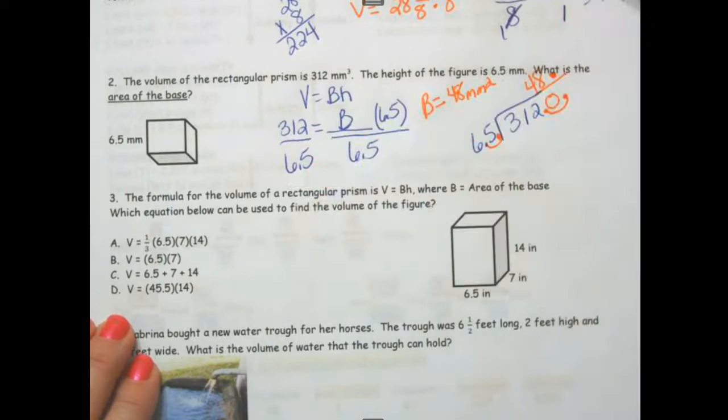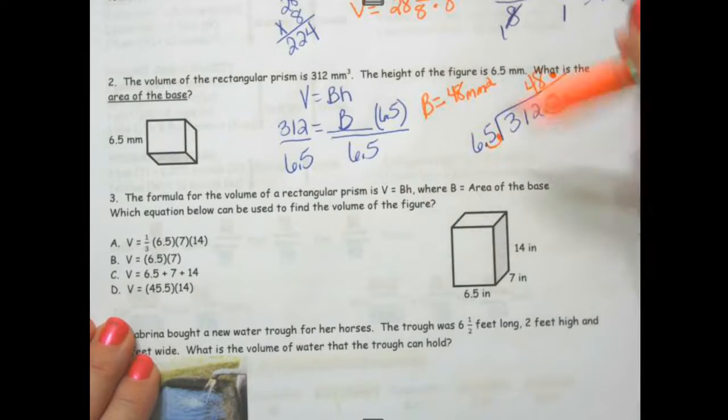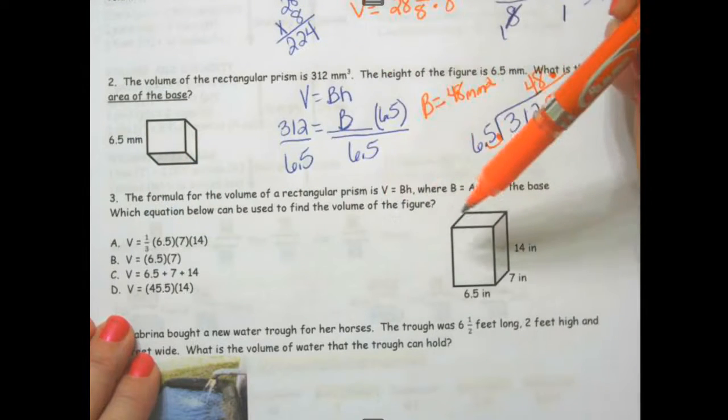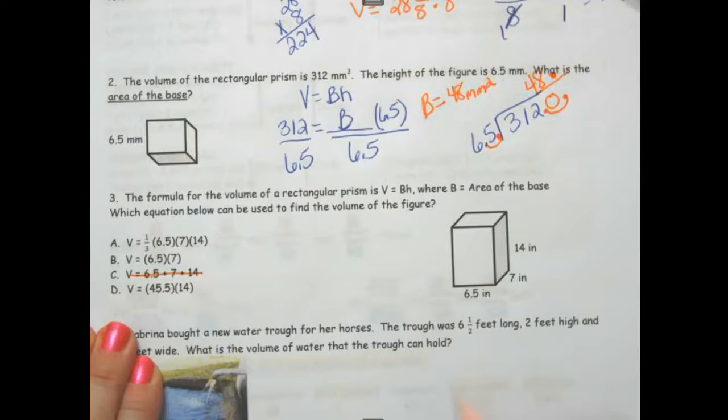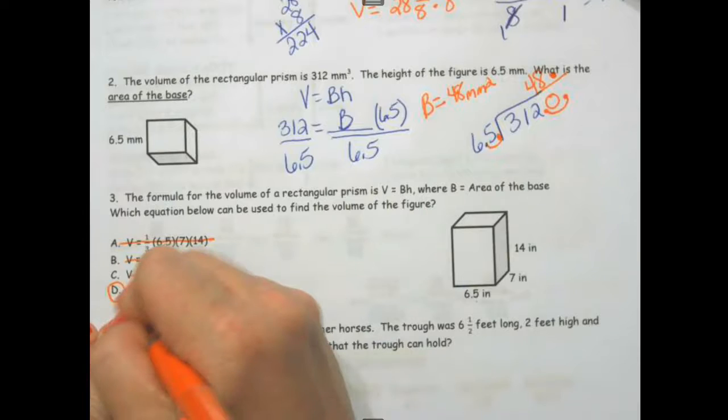The formula for the volume of the rectangular prism is big B times H, where big B is the area of the base. Which equation can be used to find this? I want to look at this and take this one out because that's all adding. We're not doing one third anywhere. 6.5, 7 is just the area of the base, so that leaves us with D.